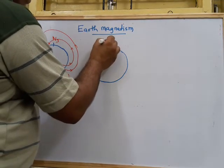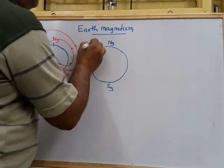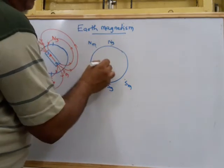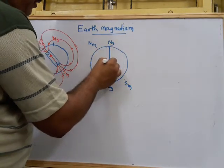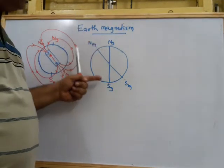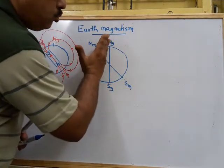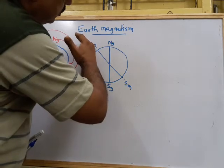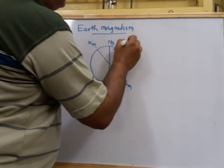The geographical north and geographical south are at the top and bottom of the Earth. Similarly, there is magnetic north and magnetic south. The vertical plane passing through geographical north and geographical south is called the geographical meridian. The vertical plane passing through magnetic north and magnetic south is called the magnetic meridian.